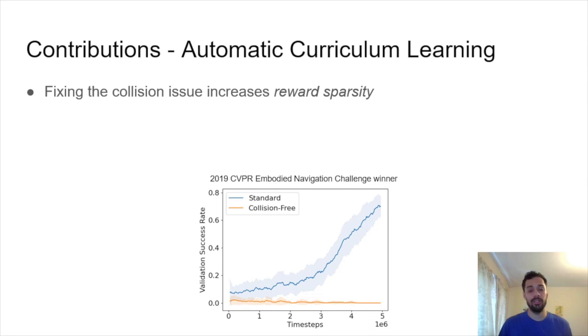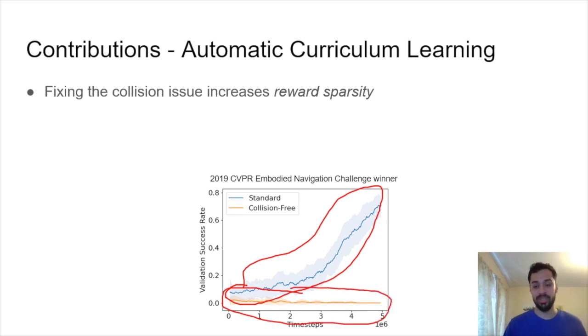But it turns out that fixing the collision issue causes a new issue called reward sparsity. This chart here at the bottom shows the 2019 CVPR embodied navigation challenge winner. When we allow it to do its thing in a regular environment allowed to slide on walls, we get this blue line here. You can see it learns very quickly. When we disallow it from colliding, when we end the episode and give it a negative reward upon collision, you can see here we get this orange line where the agent does not really learn in a respectable amount of time.